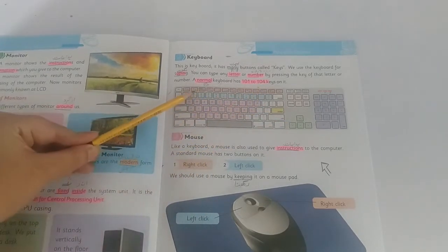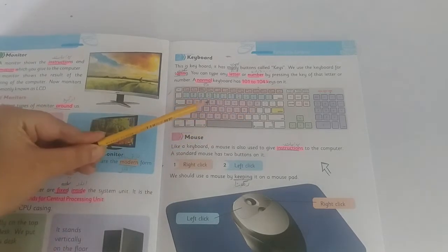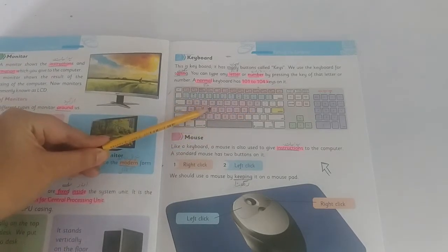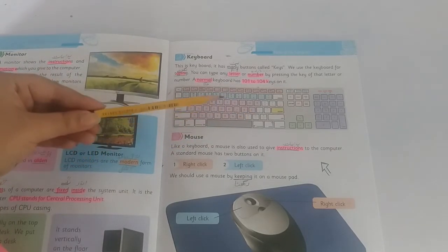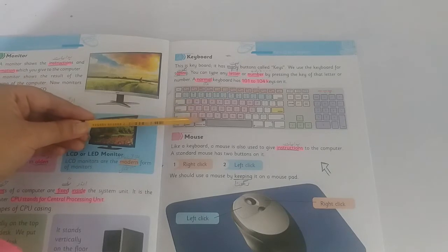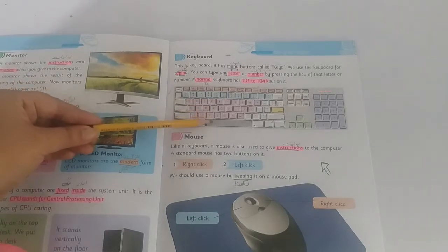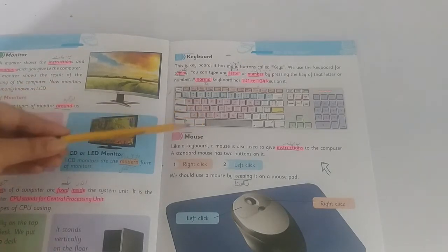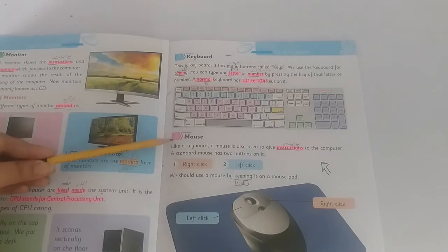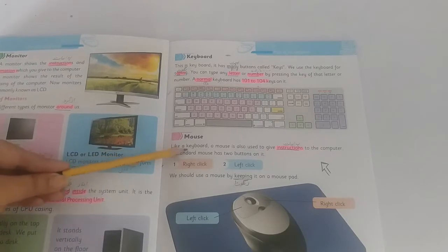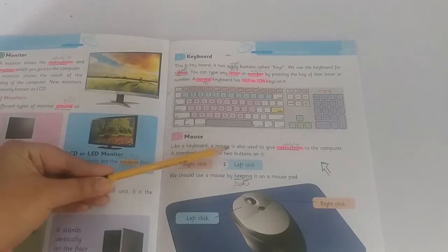Aap ke paas yeh keyboard hai, is ke upar keys lagi hui hain. Hum keyboard kyun use karte hain? Apna naam ya kisi ka bhi naam likhne ke liye, ya typing karne ke liye. Now, what is a mouse? Like a keyboard, a mouse is also used to give instructions.